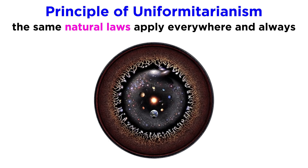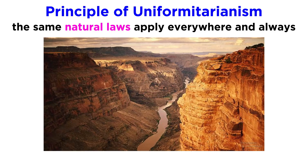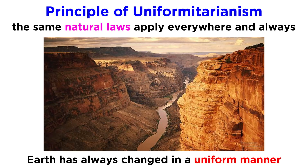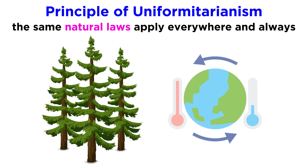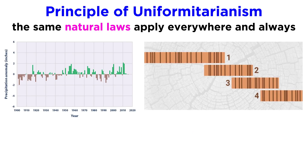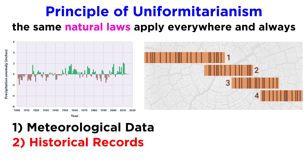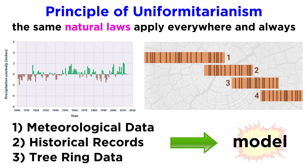The principle of uniformitarianism is the notion that the same natural laws apply everywhere in the universe, and have always applied without variance throughout the lifetime of the universe. This is a basic assumption of geology, expressed in the statement that the Earth has always changed in a uniform manner. The processes occurring today are the same processes that have occurred in the past, meaning geological events occur at the same rate now as they always have — so we can say that the present is the key to the past. Dendrochronologists use this principle when constructing past climates using tree ring chronologies. Essentially, the climate changes over time, and this change may alter how a tree responds to its surroundings. Using this principle, dendrochronologists can compare meteorological data and historical records of environmental events to tree ring data in order to construct a model.